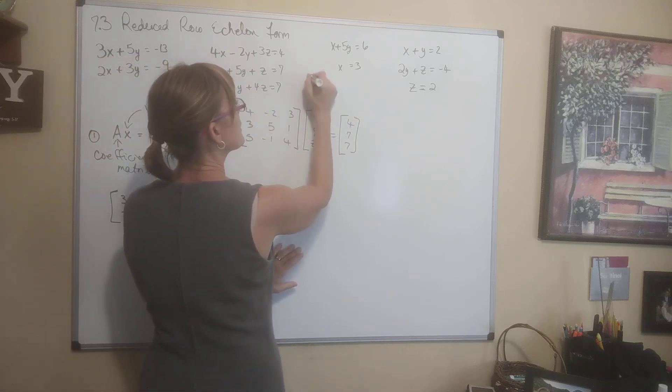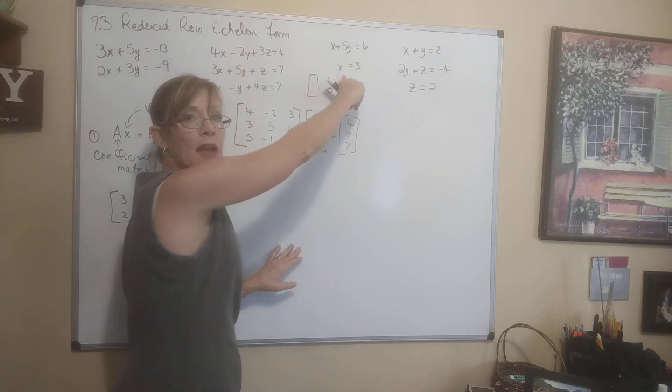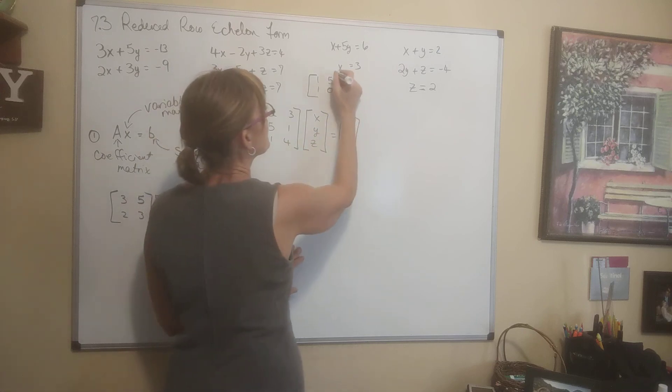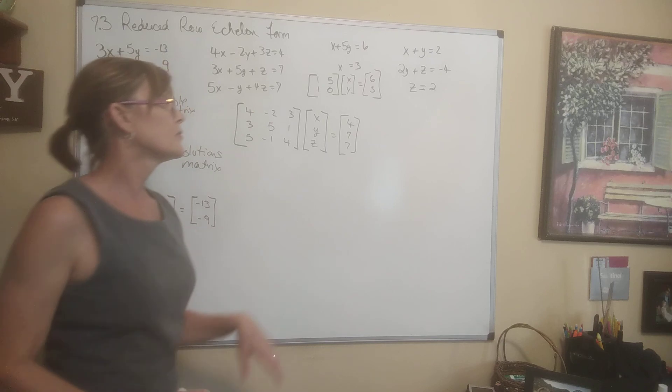Here's this one. I'll write it up here. Coefficient matrix, 1, 1, 5, 0. See, I did not have a Y term. That means the coefficient is 0 times the variable XY is equal to 6, 3 matrix equation.